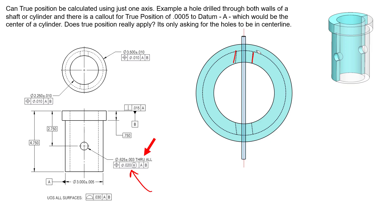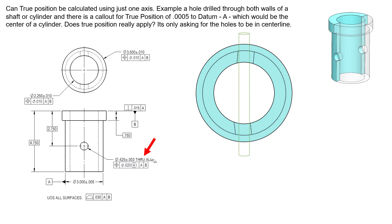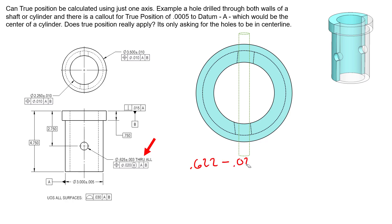Wherever the holes drift — left or right — the axis goes with them, and that axis must always remain within the diametric tolerance zone. Considering worst-case size and worst-case location (coincident to datum A), we can calculate a worst-case boundary called the virtual condition, inner boundary, or MMB. We can't directly measure this diameter, but we know that these hole surfaces will never cross into that boundary.